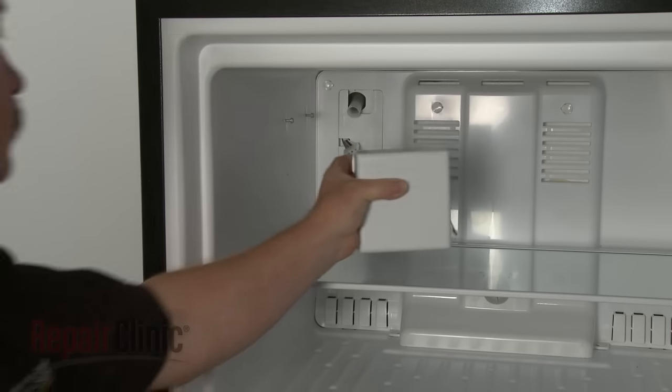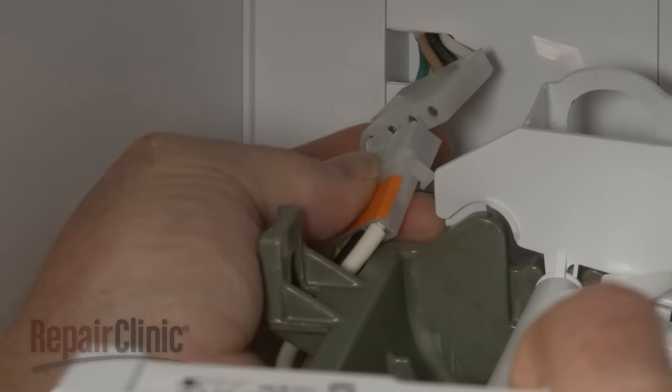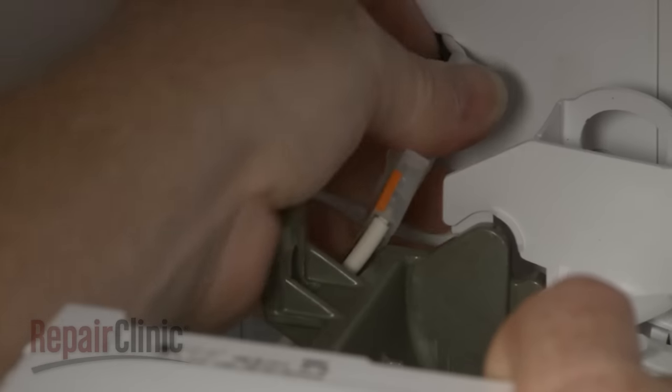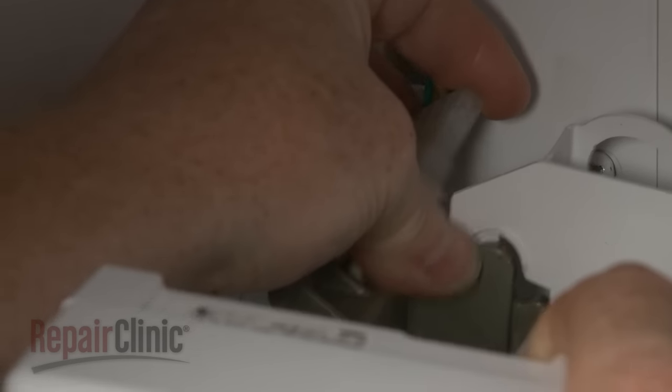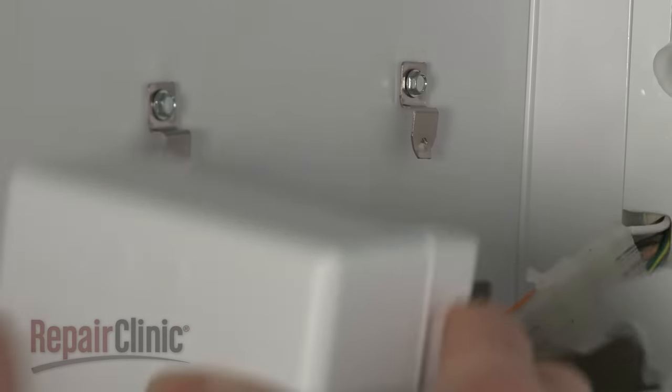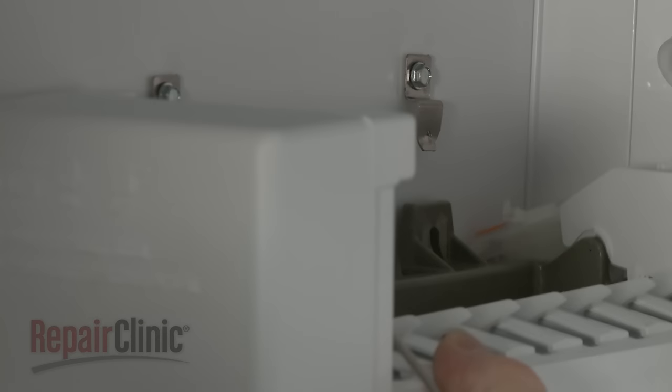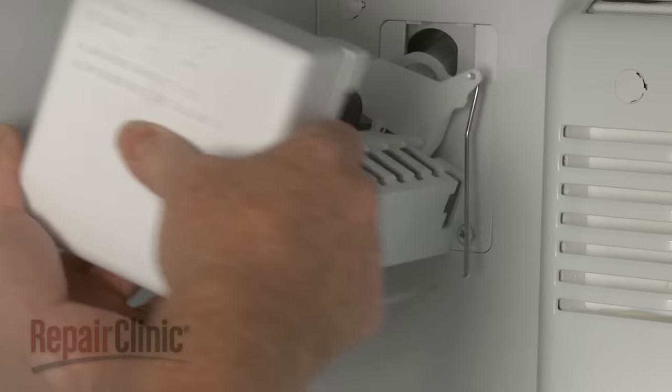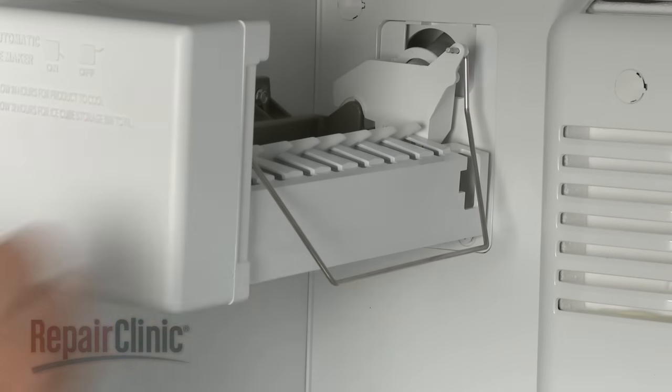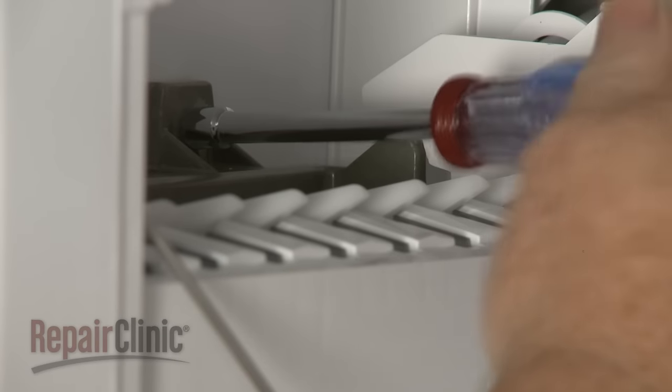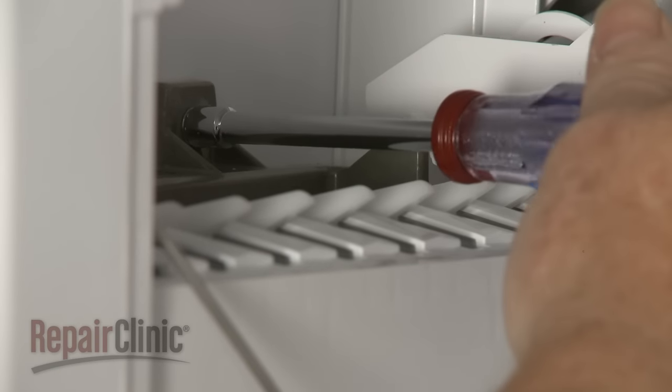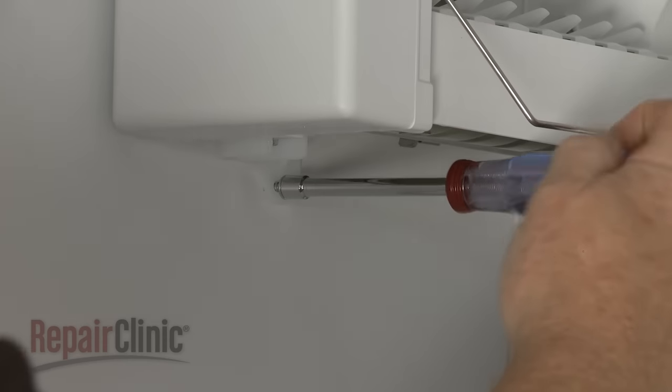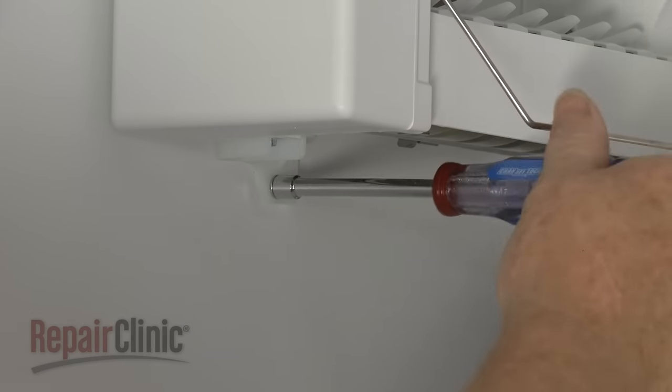Set the ice maker in the freezer compartment and connect the wire harness connectors. For side-by-side models, the ice maker mounting tabs can be slid under the mounting clips. Otherwise, the mounting tabs can be hooked directly onto the screws as you align the fill tube in the access hole. Tighten the screws, but avoid over-tightening. Now thread and tighten a half-inch hex head sheet metal screw to secure the ice maker's bottom mounting bracket.